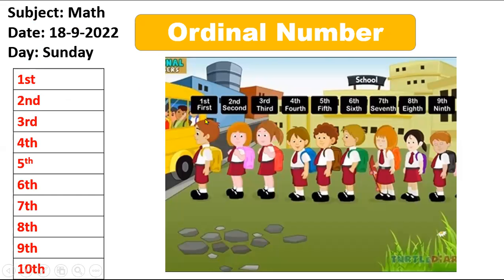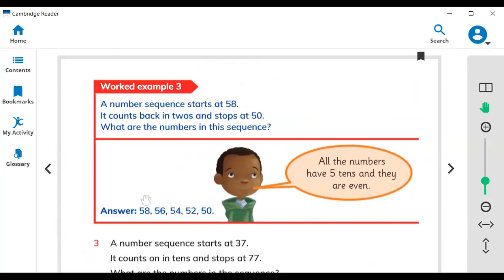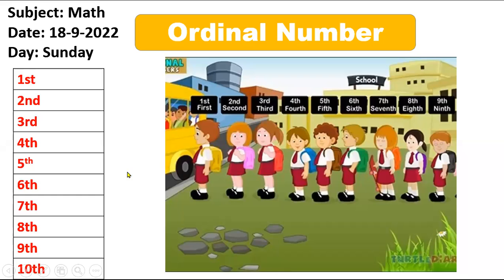In exercise number two we learn about ordinal numbers. Look at page 24 — in question two you have to locate the ordinal numbers. Here are some objects — monsters — and you have to identify who is first, second, and third.